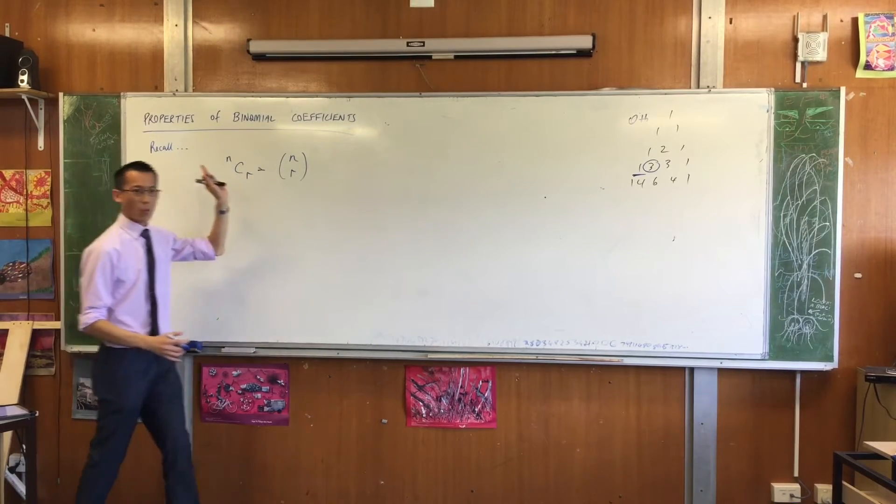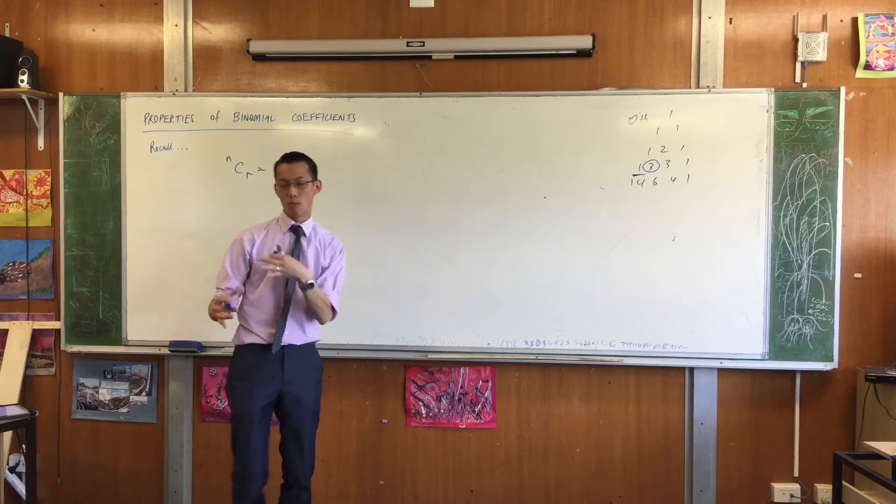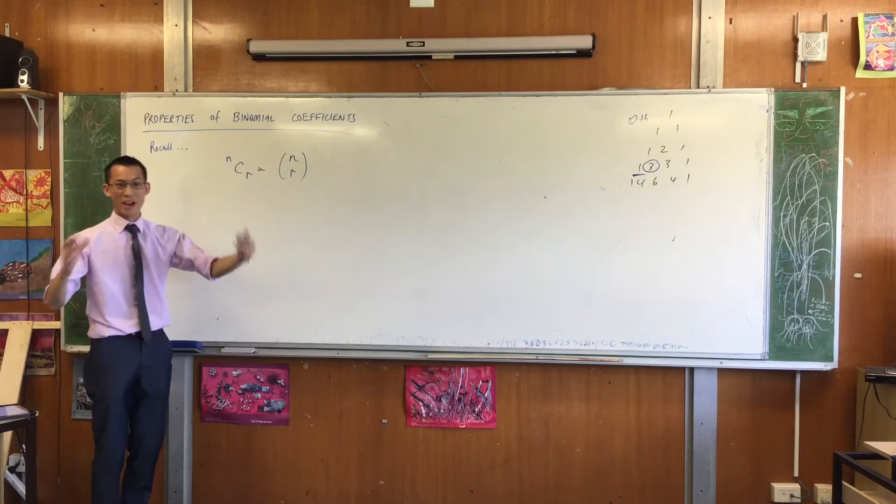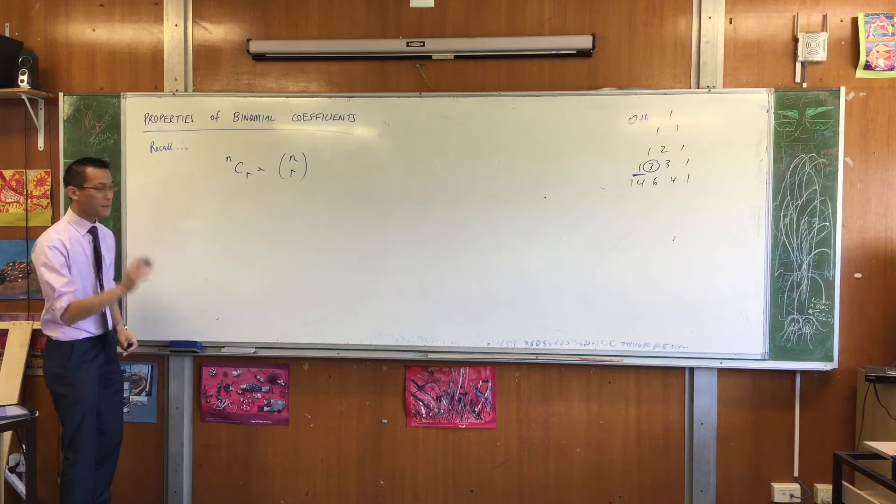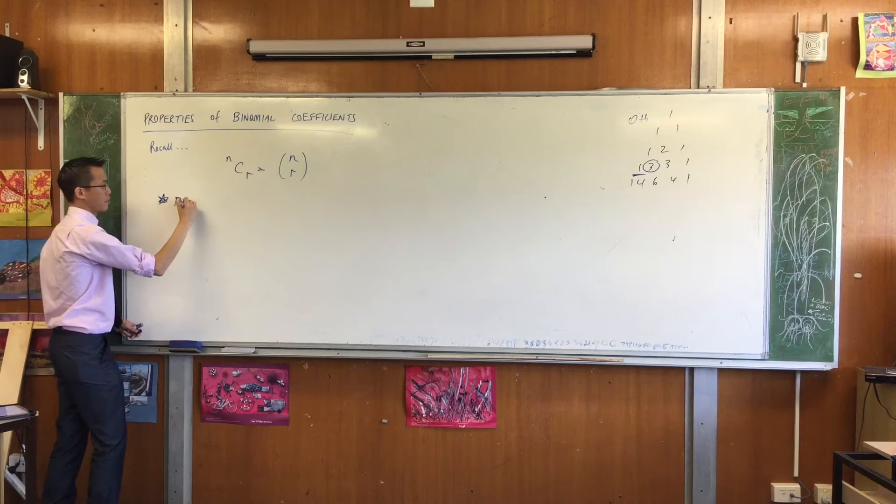So having this notation here, what I want us to know is that when you understand these numbers, there's some properties that come from Pascal's triangle and what happens in an actual binomial expansion. So let's begin by saying, and if you want, you can have a little sub-heading here underneath, reminder properties.